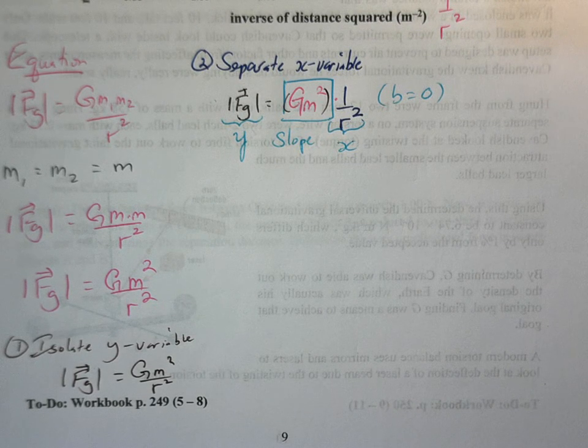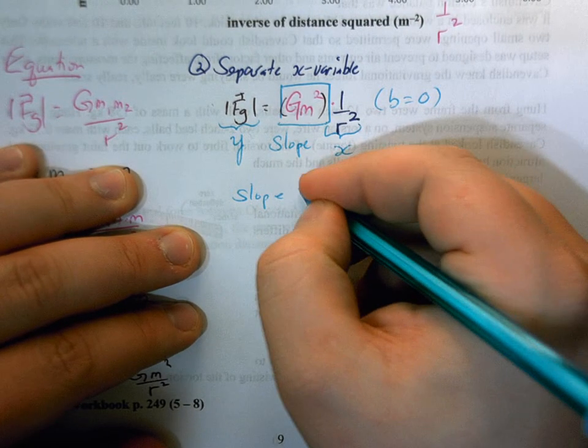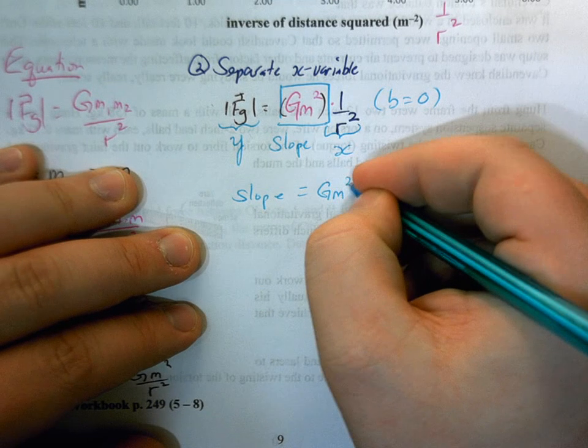Now with that, what this tells us, so we have that slope equals GM squared.